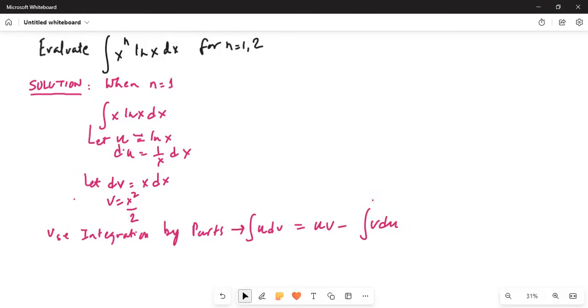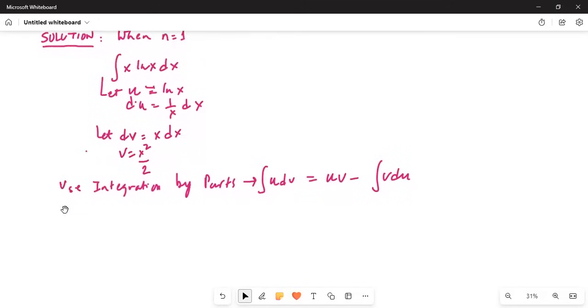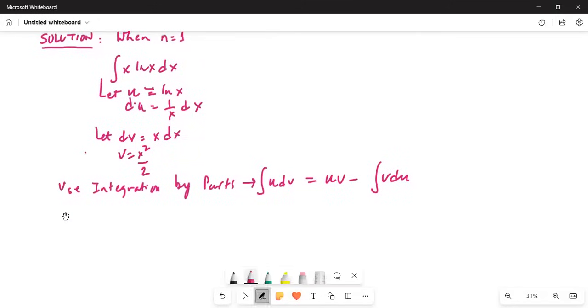If we substitute now in integration by parts, we are doing the actual original problem x ln x dx. We have defined u and dv. We have found out what is du and what is v. So, we will substitute: u is ln x times v which is x squared by 2, minus integration of x squared by 2 and du is 1 over x dx.